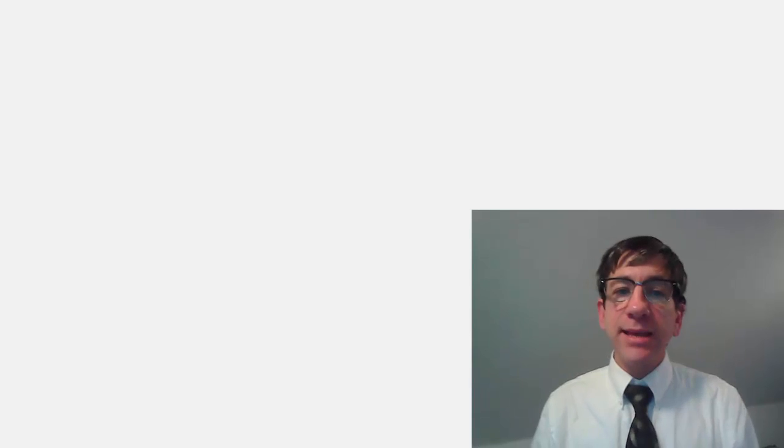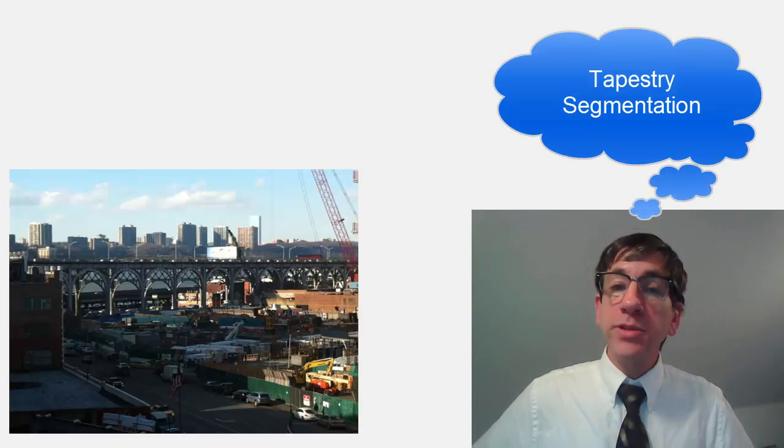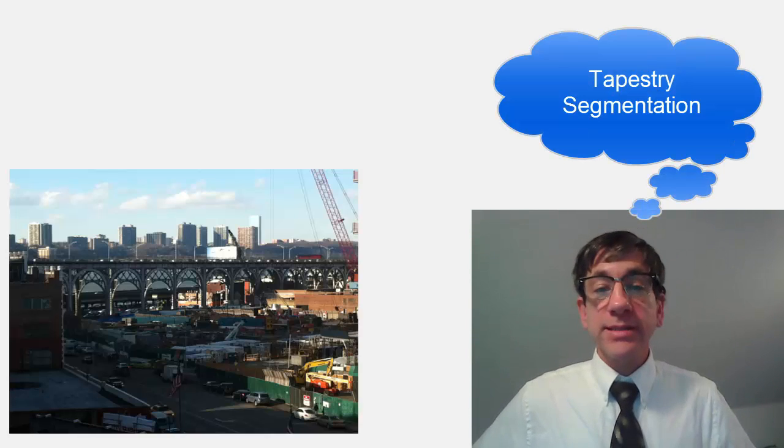I first wrote about the lifestyle cluster data available from Esri back in 2009, and since that time, the ways that data can be accessed and utilized has become easier than ever. In addition, the data itself has become more accurate and more detailed. Tapestry segmentation provides an accurate, detailed description of America's neighborhoods.